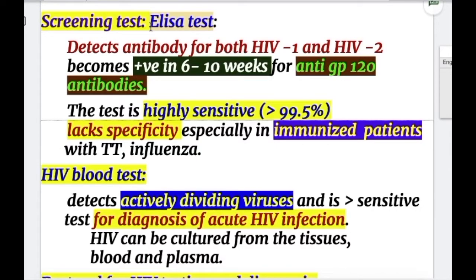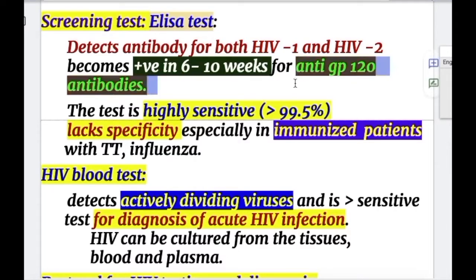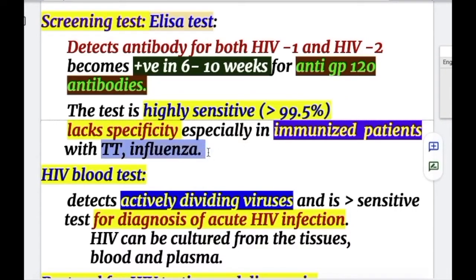The screening test is ELISA or enzyme immunoassay (EIA), which detects antibodies for both HIV-1 and HIV-2. It becomes positive for anti-GP120 antibody. The test is highly sensitive — more than 99% — but lacks specificity, especially in patients immunized with tetanus toxoid, influenza, and other vaccines.